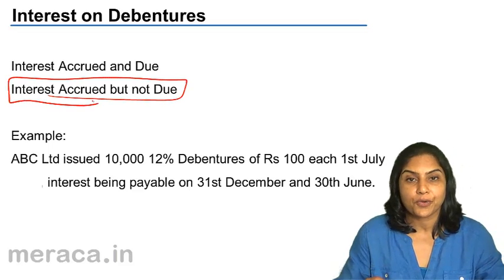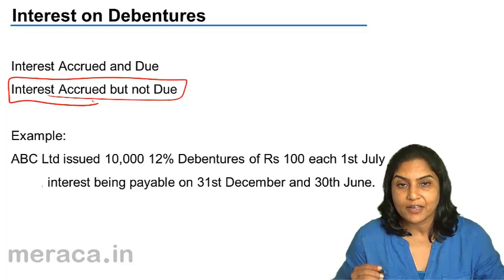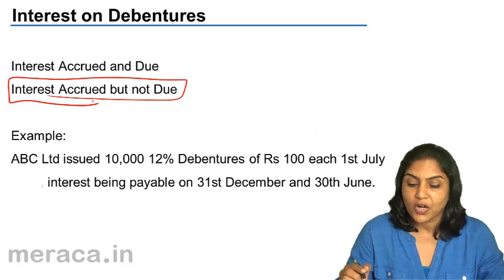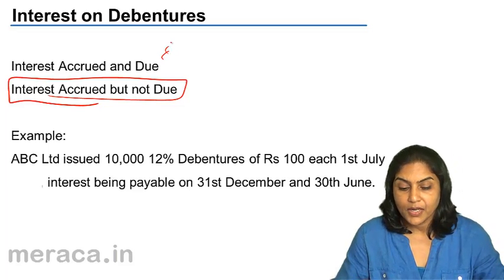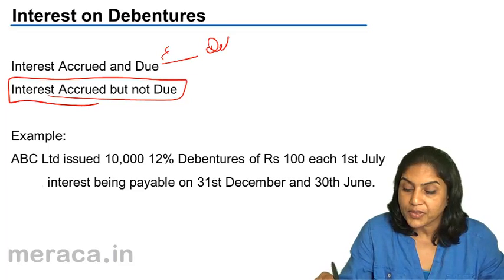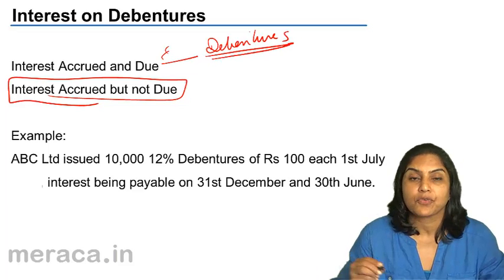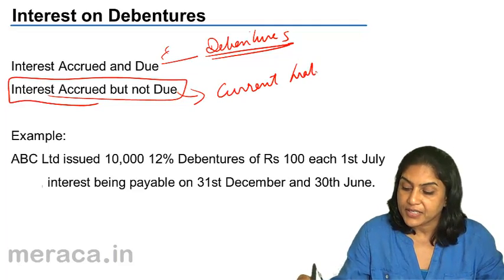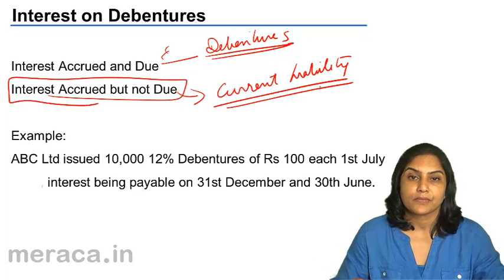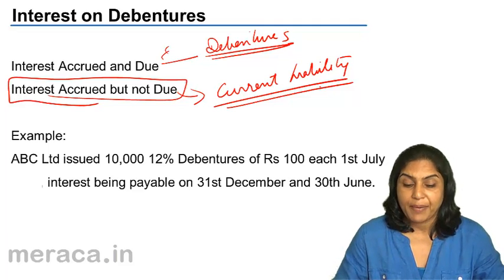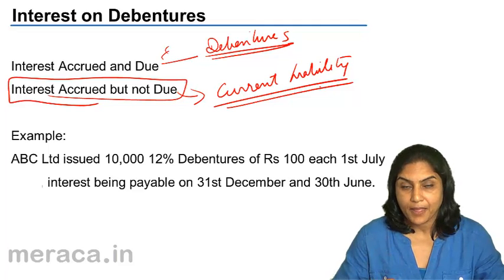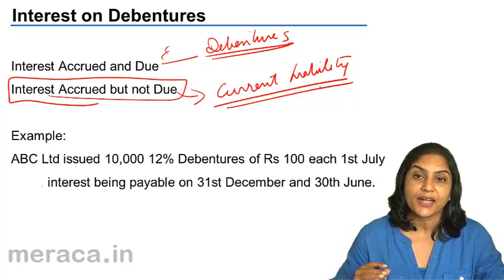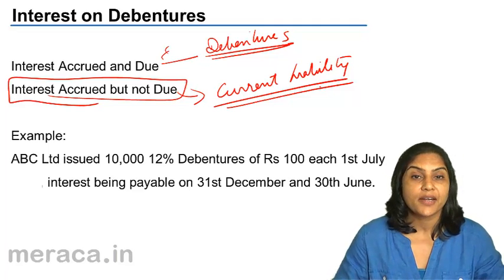Interest accrued but not yet due. But if a company has not paid interest on the due date, at the time of closing of the books of account, such interest would be called interest accrued and due. The interest accrued and due is shown along with debentures, so it becomes a part of long-term borrowings. Interest accrued but not due, on the other hand, is shown as a current liability. If the due date has passed and the company has still not paid the interest, it is called interest accrued and due.